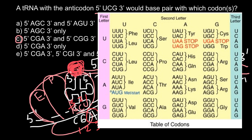The same amino acid can be specified by different codons. But one codon can specify only one amino acid — you wouldn't find the same sequence specifying a different amino acid anywhere in the table. So one amino acid can be specified by different codons, but one codon can only specify one amino acid.